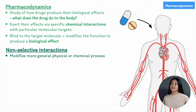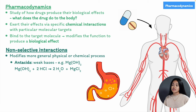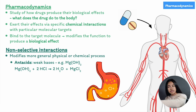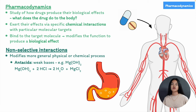A great example are antacids like calcium carbonate or magnesium hydroxide, which are commonly used for indigestion. These don't have a particular molecular target — they modify a chemical process by neutralizing stomach acid through a simple chemical reaction. They're a weak base that acts on the acidic environment of the stomach. Your stomach produces large amounts of hydrochloric acid which aids in the digestion of food, so the hydrochloric acid reacts directly with the antacid and the acid becomes neutralized, resulting in a reduction in the acidity of the stomach.